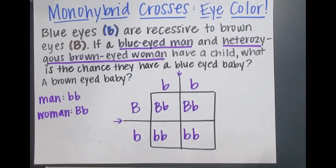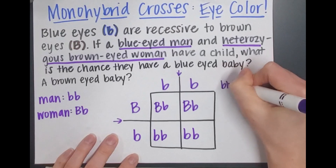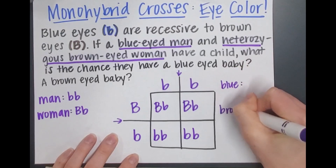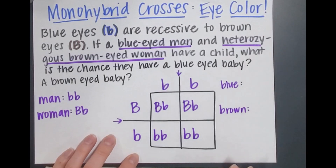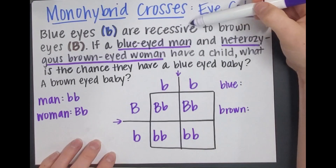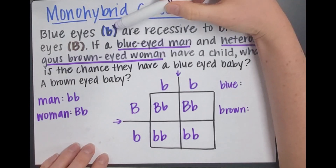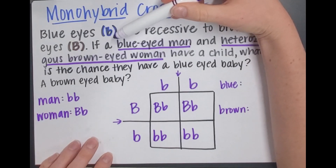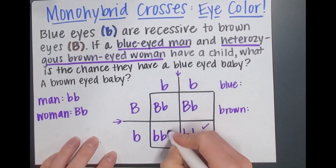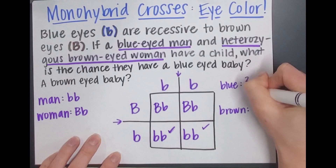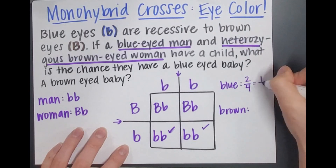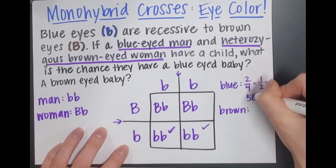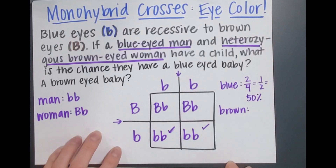Now we've filled in our Punnett square completely. We're looking at the chance of a blue-eyed baby versus a brown-eyed baby. Blue eyes are recessive, so in order for a baby to have blue eyes they have to have both little b alleles — they cannot have any dominant big B alleles. We have two possibilities out of four for blue eyes, or one out of two, or 50%. So there's a 50% chance they have a blue-eyed baby.